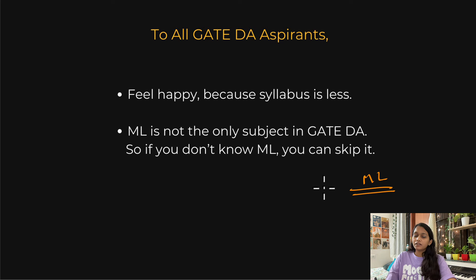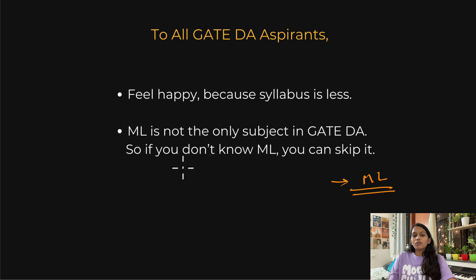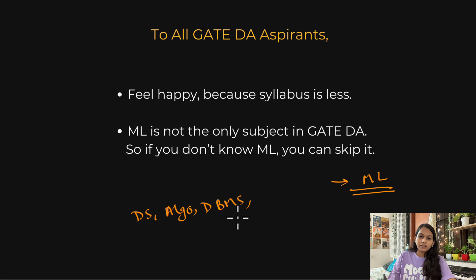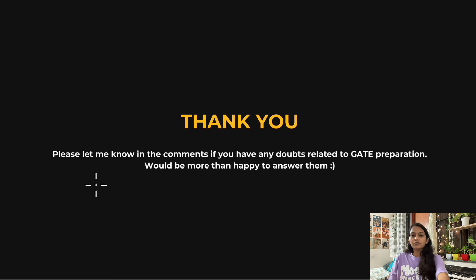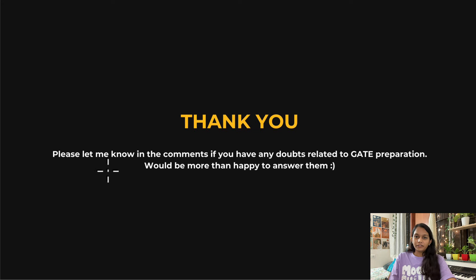If you are a GATE CSE aspirant also appearing for GATE DA, don't be afraid of machine learning — you can skip that one subject. There are a lot of overlapping subjects like data structures, algorithms, DBMS, probability, linear algebra, and calculus. So don't be afraid of the term 'machine learning' — it's not the only subject in GATE DA and you can skip it if you want. If you have any doubts related to GATE preparation, ask me in the comments and I will definitely try to answer them. Thank you everyone.